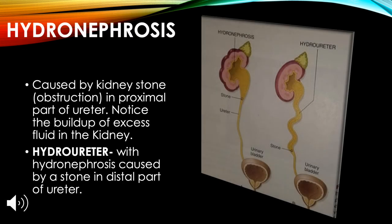Hydronephrosis is caused by a kidney stone or obstruction in the proximal part of the ureter, resulting in a buildup of excess fluid in the kidney. Hydroureter with hydronephrosis can be caused by a stone stuck and obstructed in the distal part of the ureter.